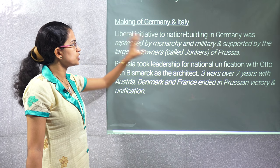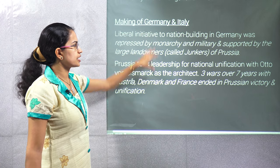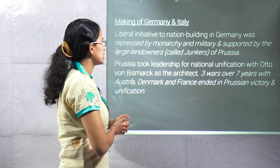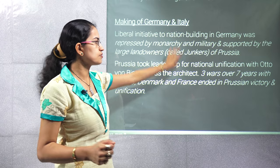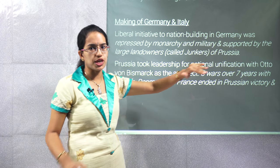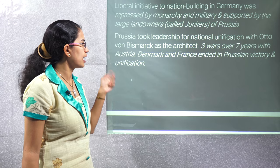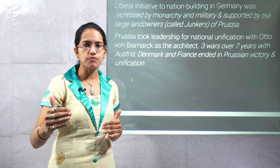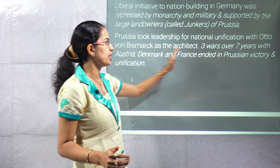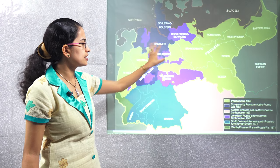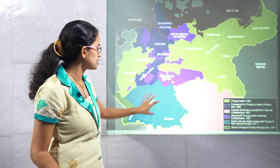Coming on to the making of Germany: the initiative of liberalism was the key idea for nation building in Germany as well. This was repressed by the monarchy and the military, but it was supported by large landowners known as the Junkers of Prussia. Finally this ended with the unification of Germany over three wars in seven years — against Austria, Denmark and France — leading to the victory of Prussia and unification. This was the region of Prussia before 1866; various areas were later incorporated, while some regions like Austrian territory secluded themselves from the German Confederation.